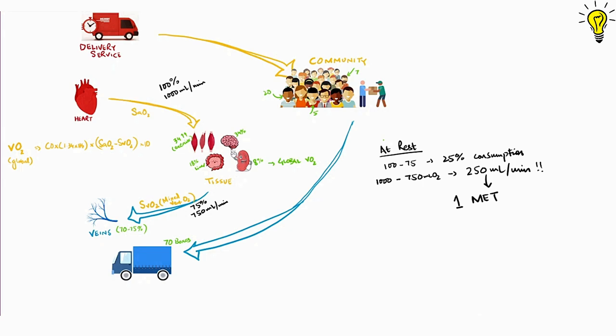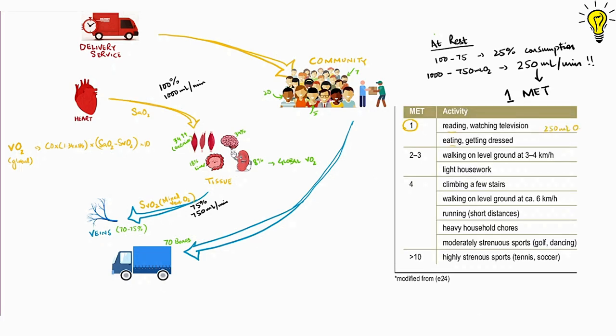So for a sitting person having 1-MET oxygen demand, body is delivering oxygen at 1000 ml per minute, almost 4 times more than required.